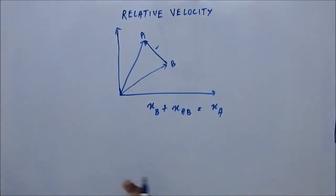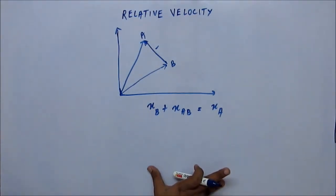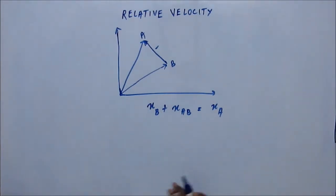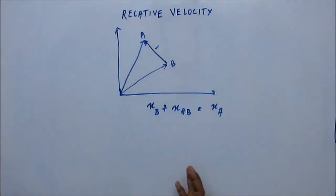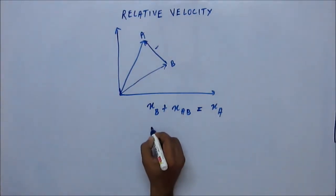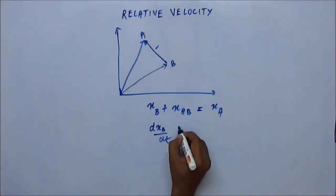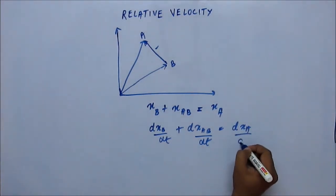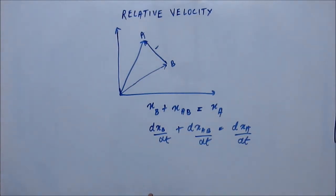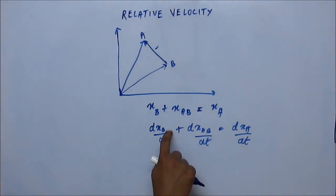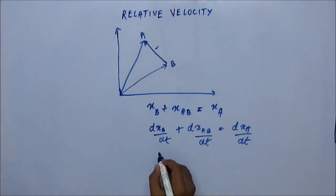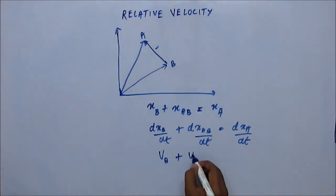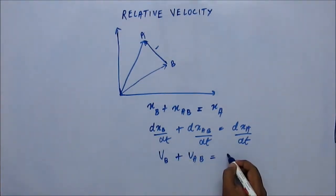Now if we are going to differentiate both sides — differentiating both sides is allowed, as we have discussed before, because it's a mathematical operation. Just like it's allowed to multiply both sides by a number, square both sides, or take the square root on both sides, similarly we can differentiate both sides without affecting the equality. Differentiation of displacement gives us velocity, so the derivative of the position vector of B with respect to time is the velocity of B. Therefore: velocity of B plus velocity of A with respect to B equals velocity of A.